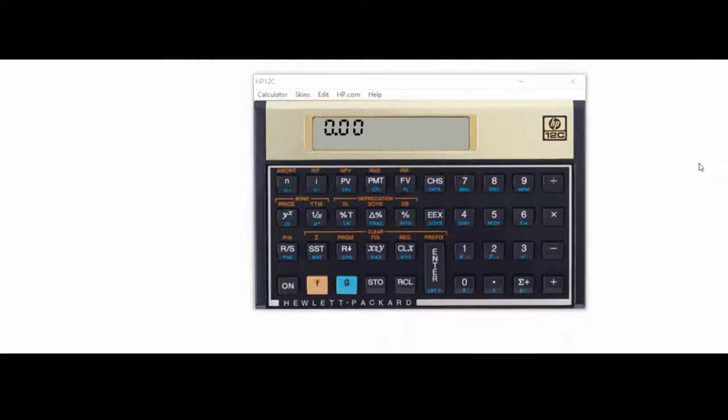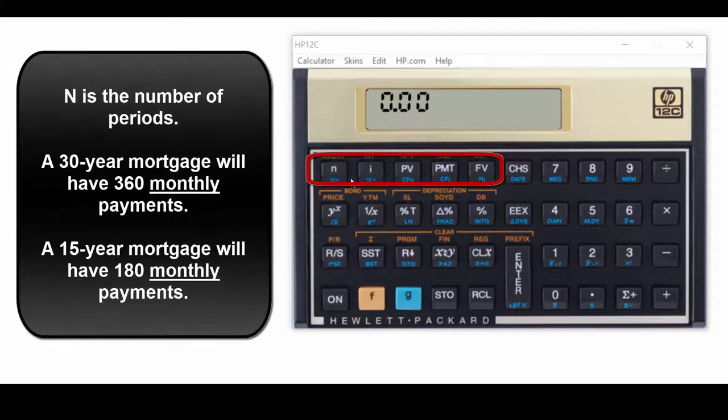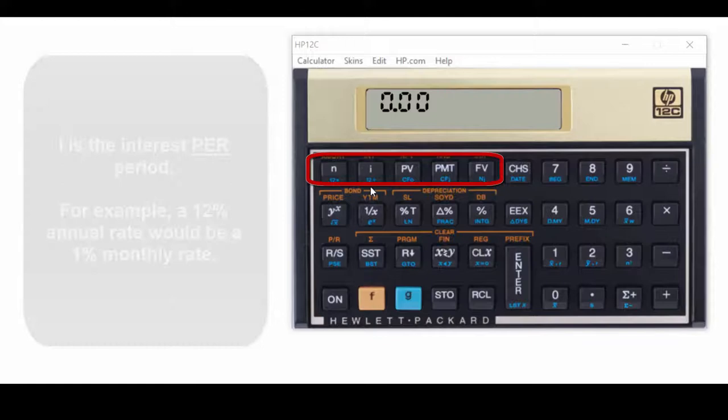Okay, this is a quick primer on how to use the HP 12C for mortgage payments. We're up here in the first row. N stands for the number of periods. So if it's a 30-year mortgage, that would be 360 periods. Twelve times 30 is 360. If it's a 15-year mortgage, it would be 180.